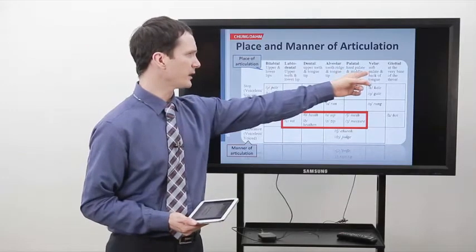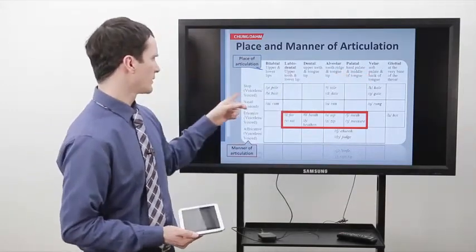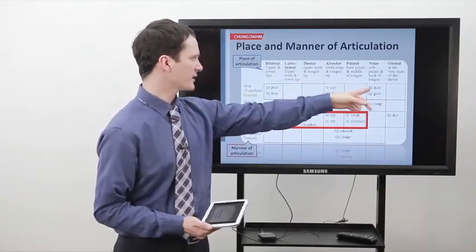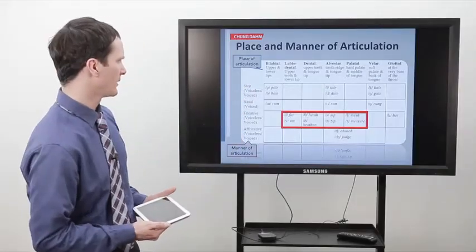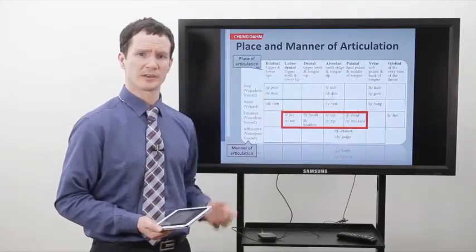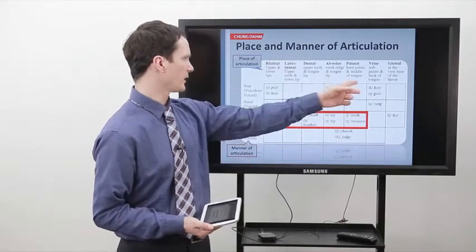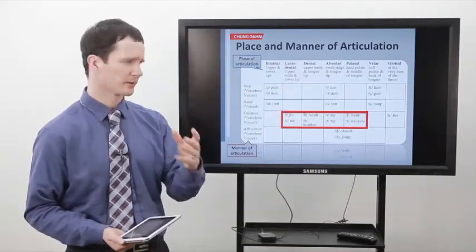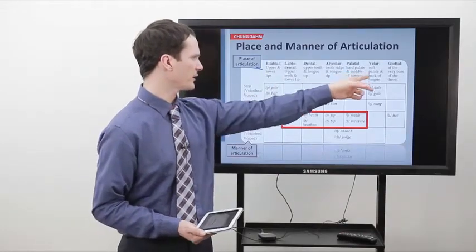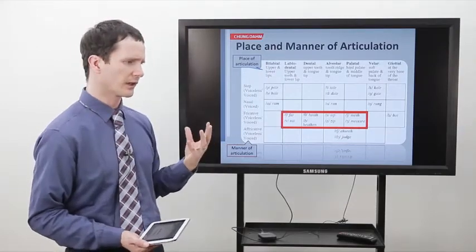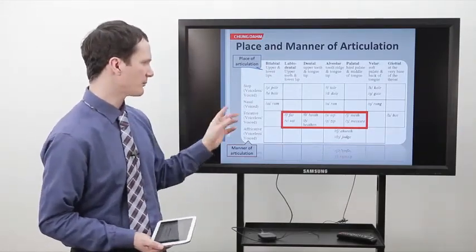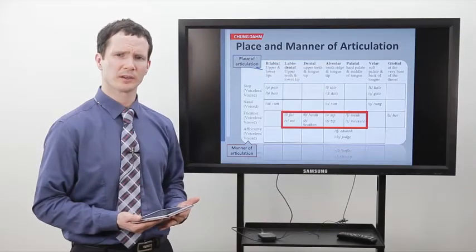If we look at the velum — the soft palate — the first combination is a voiceless K sound: KUH, made with the soft palate. The voiced version of a velar sound is the hard G sound — a voiced velar stop, because we're stopping the air coming out. The next is a velar nasal: we change the air by putting it out our nose, so we say NG. We are using the back of our tongue, just like the G sound, except the air is going out of our nose.